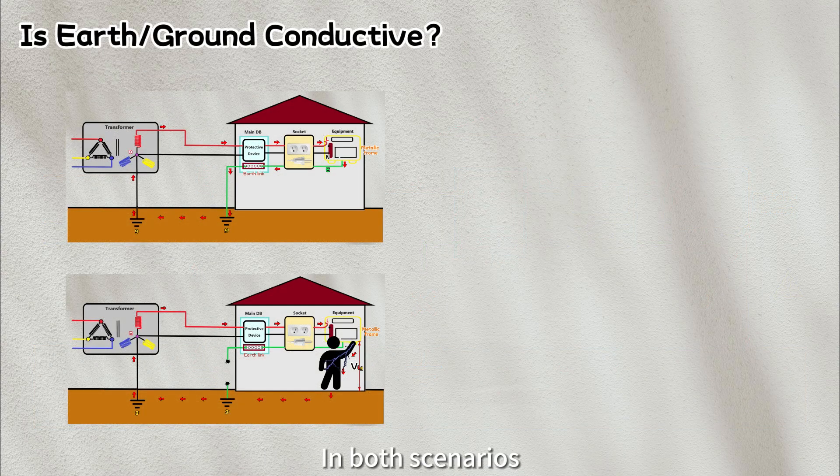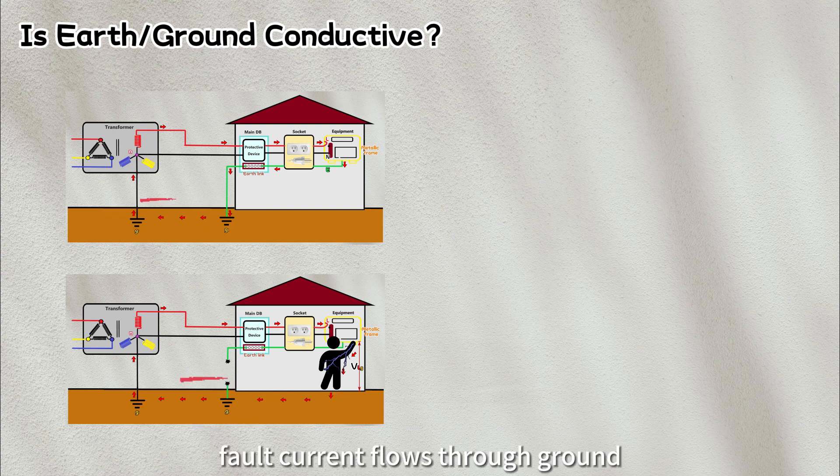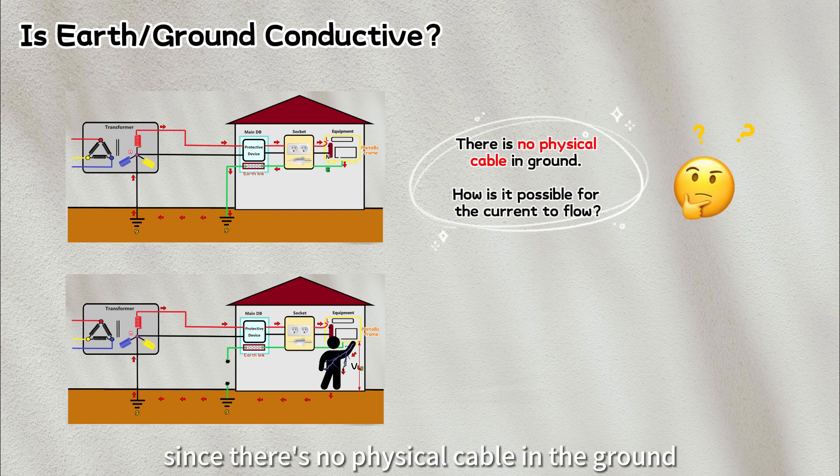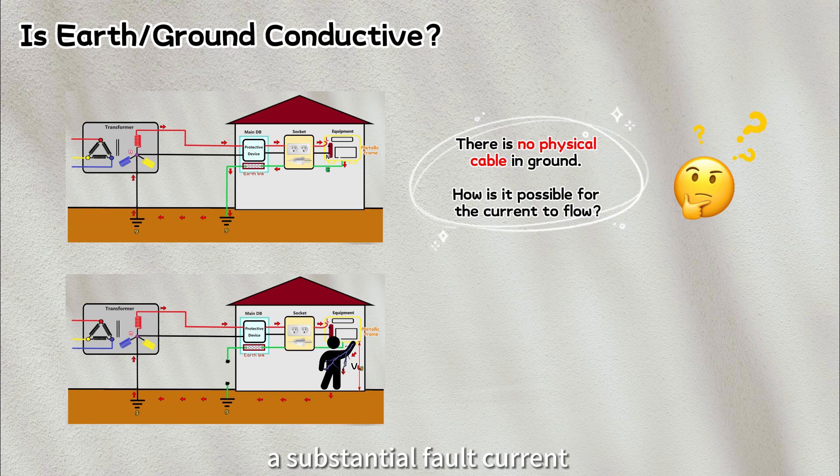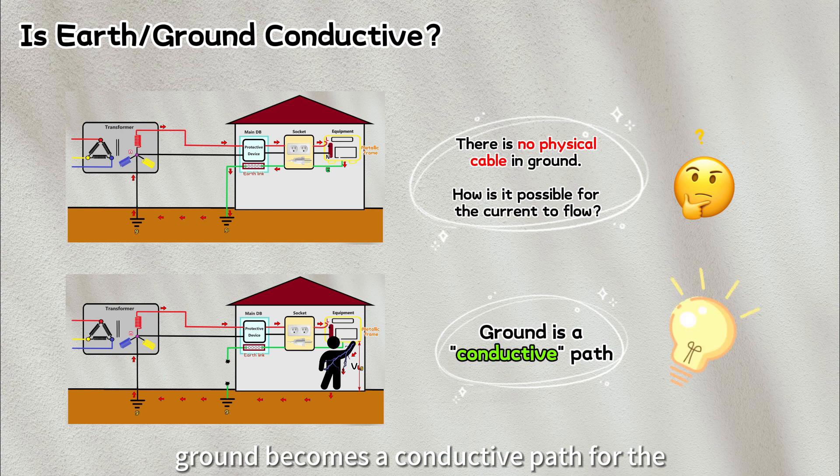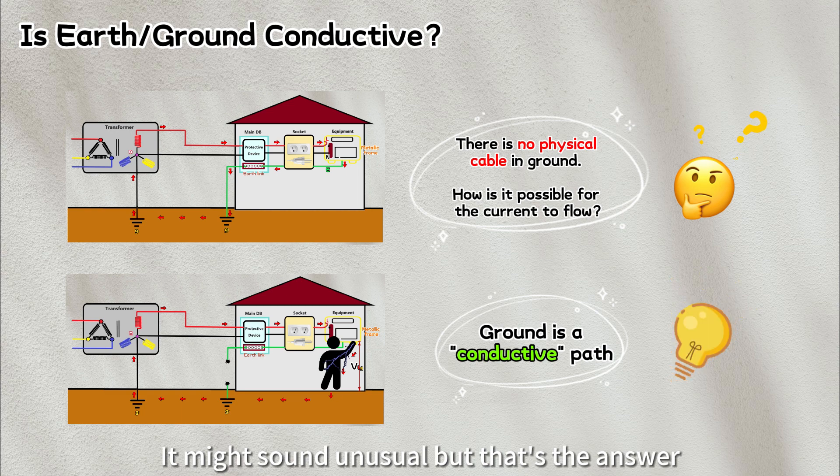In both scenarios, it is noticeable that the fault current flows through ground and back to transformer source. Now you might be wondering, since there's no physical cable in the ground, shouldn't this be an incomplete circuit? How is it possible for the current to continue flowing? However, during an earth fault, a substantial fault current does indeed flow through the ground. Does this suggest that the ground becomes a conductive path for the current to return to the source, completing the circuit? It might sound unusual, but that's the answer.